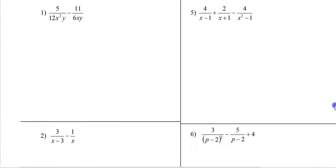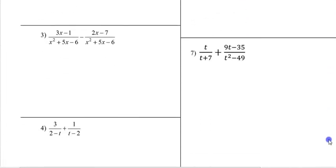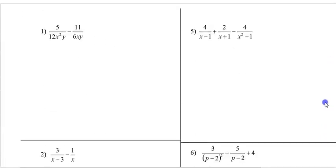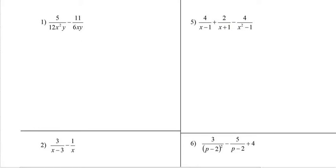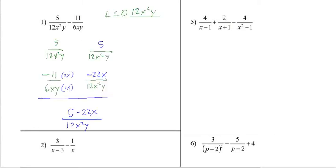So here are 7 problems for you to try. I know that seems like a lot. So hit pause. Give them a shot. I'll do one at a time. And there is our first one. So the LCD is 12. They both have x's. So it's x squared. And then the y. So we make that our common denominator. The top one's done. The second term needs to be multiplied by a 2x. And there we go. Add them up. And there's our answer.